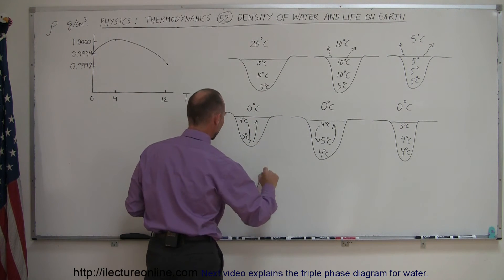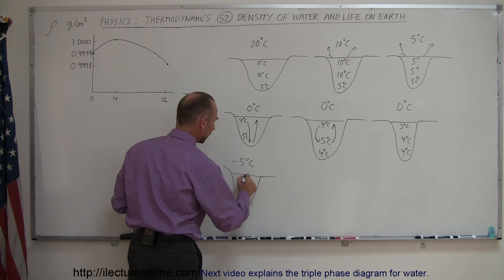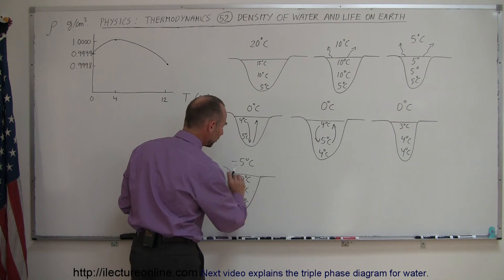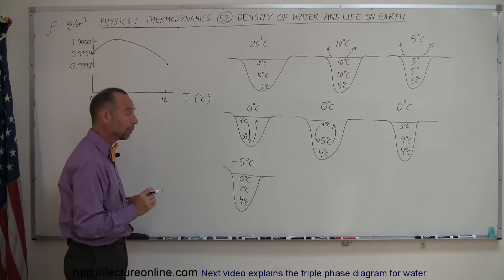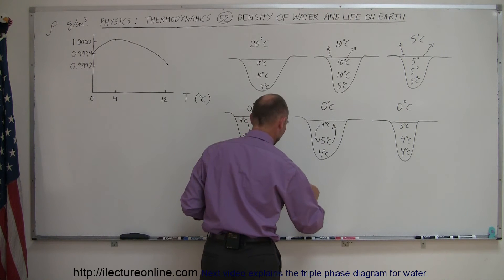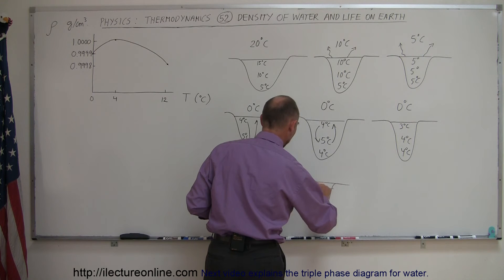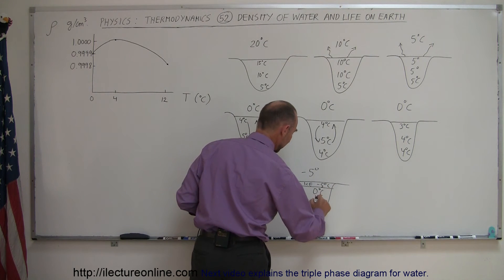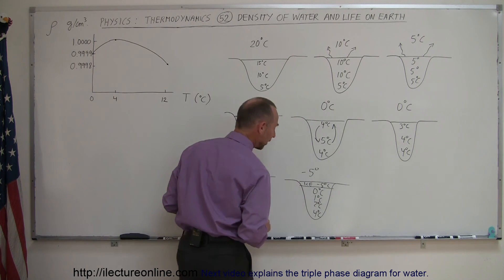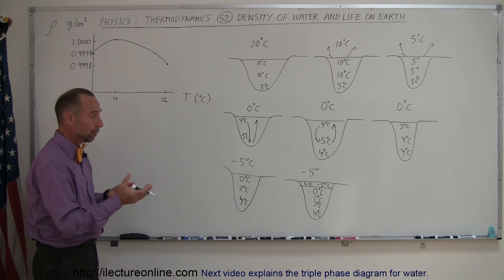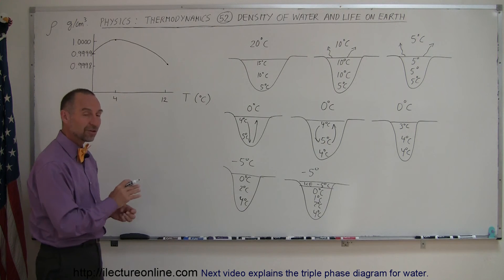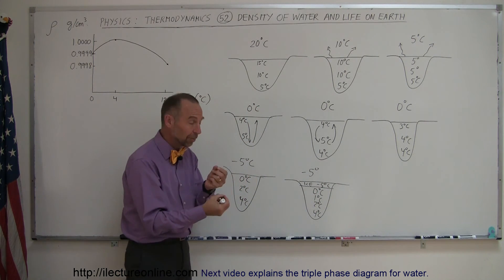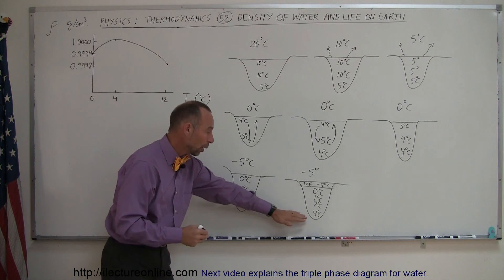Let's say it gets colder and colder outside — now we have minus 5 degrees centigrade. The water continues to cool at the top: this will be 0 degrees centigrade, maybe 2 degrees centigrade below that, then 4 degrees centigrade water at the bottom. Once the top layer reaches 0 degrees centigrade and it's colder than that outside, that water will begin to freeze and turn into ice. We end up with a layer of ice at the top, and the ice will continue to cool down to temperatures equal to the outside. Underneath we have 0 degree water, then 1 degree, 2 degree, all the way down to 4 degrees centigrade. All winter long, ice stays at the top, and at the bottom of the lake the water continues to be 4 degrees centigrade. The water does not circulate because colder water is less dense and stays separated, and water is a very poor conductor of heat.